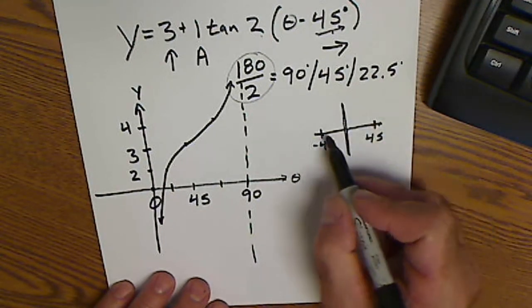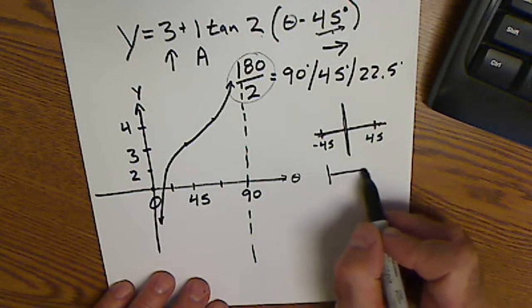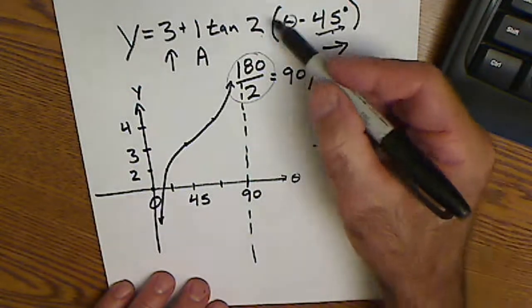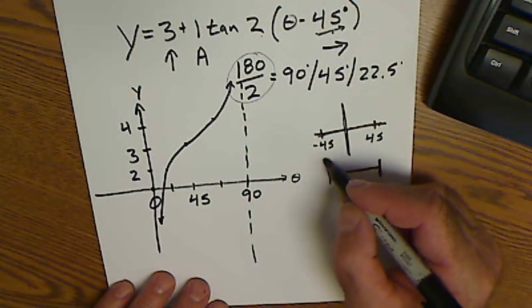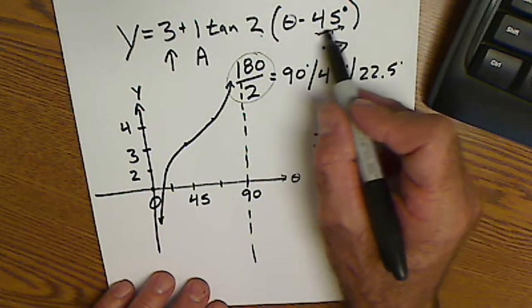Also start with a little subgraph for tangent so you see the overall period. The overall period is 90 because of that 2. I split that to get negative 45 and 45. After I have that, I shift it over this amount.